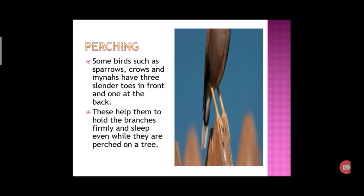Perching. The birds have three slender toes in front and one at the back that help them to hold a branch firmly. For example, sparrows and crows.